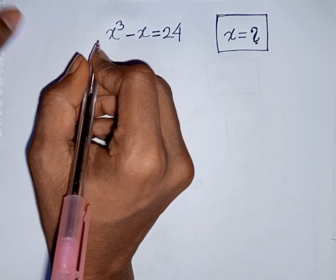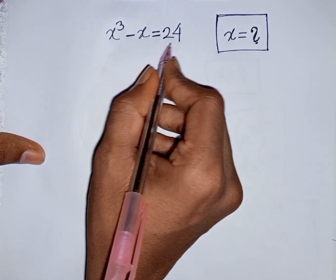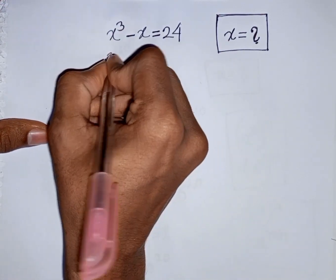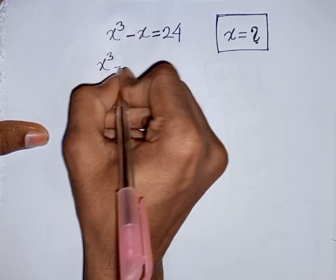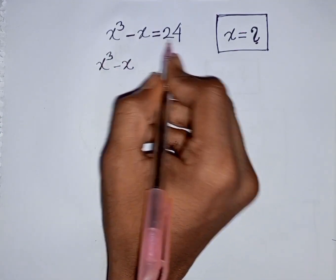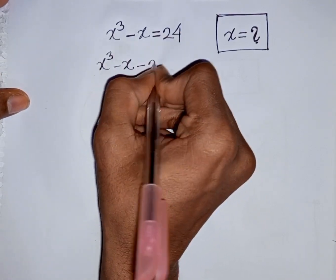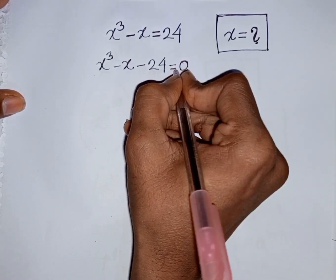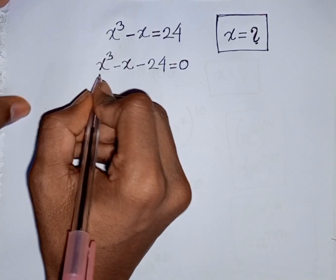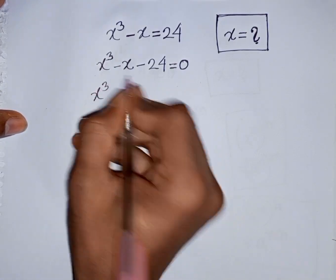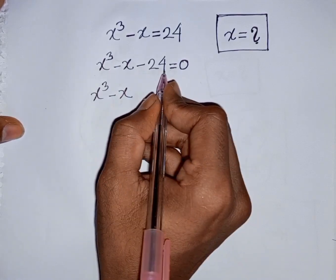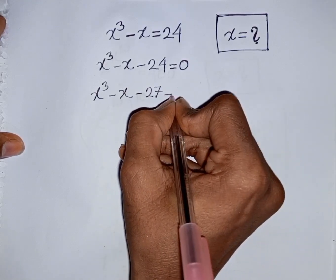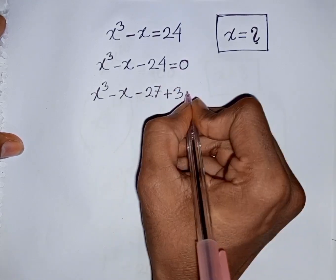How to solve x³ - x = 24. Find the value of x. We have x³ minus x, then take plus 24 to the left side, so this will be minus 24, equal to 0. Now, x³ minus x minus 24 can be written as minus 27 plus 3, then equal to 0.